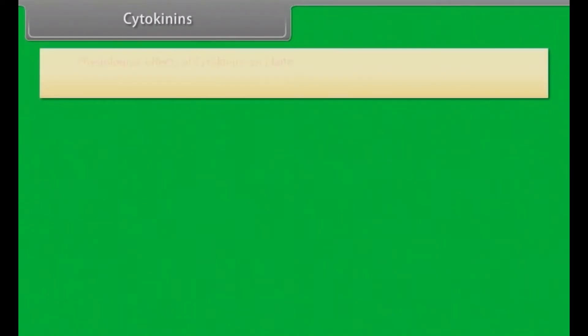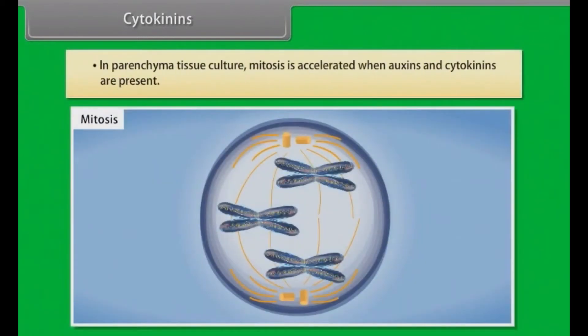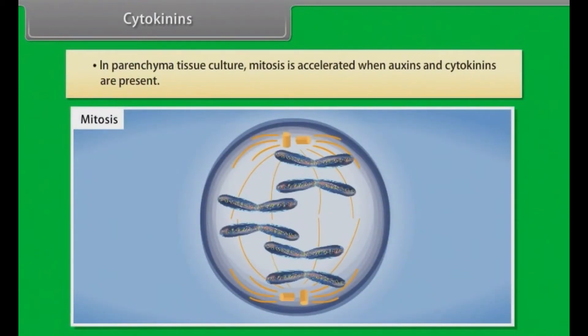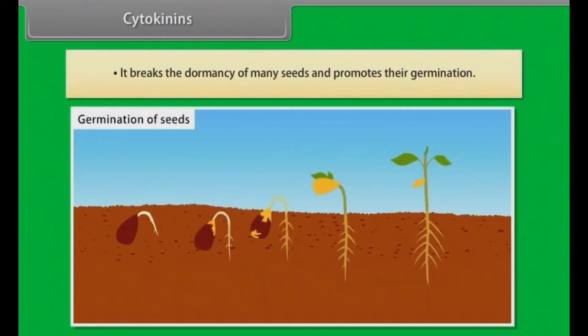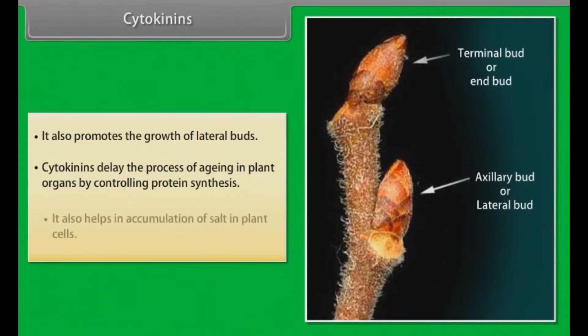Cytokinins. Physiological effects of cytokinins on plants: in the presence of auxins, cytokinins stimulate cell division even in non-meristematic tissues. In parenchyma tissue culture, mitosis is accelerated when auxins and cytokinins are present. It breaks the dormancy of many seeds and promotes their germination. It also promotes the growth of lateral buds. Cytokinins delay the process of aging in plant organs by controlling protein synthesis. It also helps in accumulation of salt in plant cells.